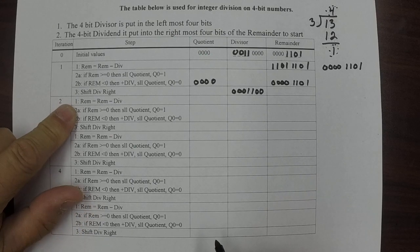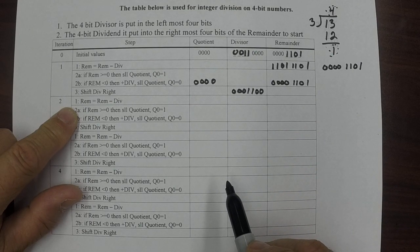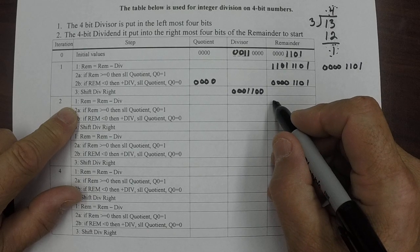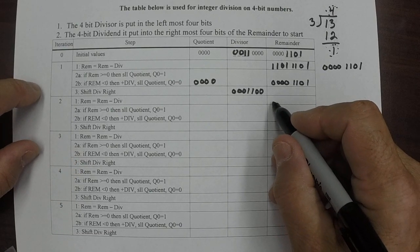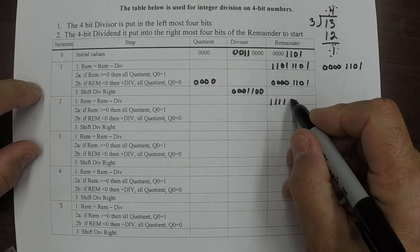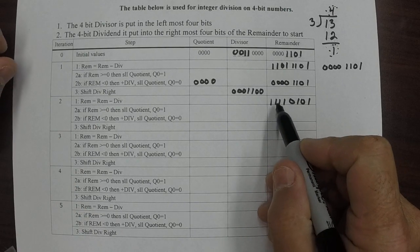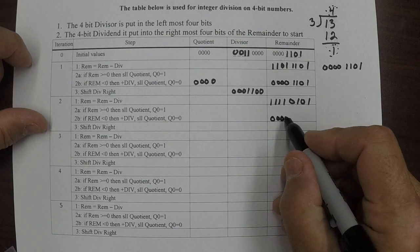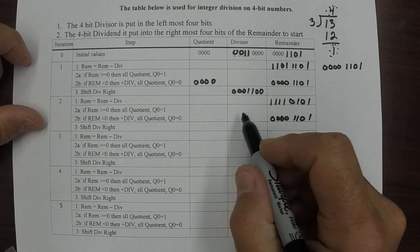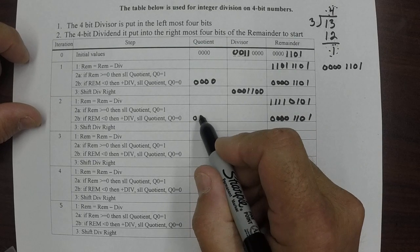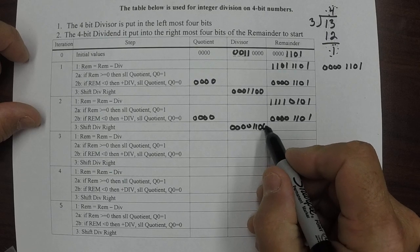Now I'm going to do the same thing. I'm going to take the remainder and subtract the divisor from it. I'm not going to bore you with doing the exercises over and over again. The answer is one, one, one, one, zero, one. It is less than zero, so I restore it to where it was. I shift the quotient left and put a zero right there. Then I shift the divisor right: one, one, one, zero, zero.